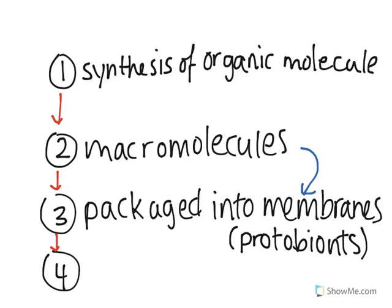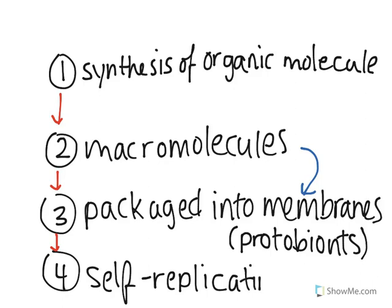The last step was that self-replicating molecules came to be. This took the form of genetic information as RNA that could self-replicate and create more of itself. Because of that, evolution selected these types of molecules to continue living, since they were able to sustain themselves — they could make more of themselves and basically take over the environment during that time period.